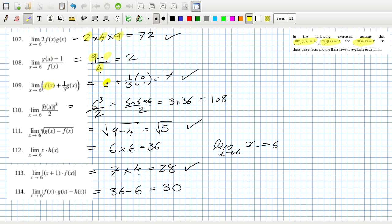...f limit which is four, plus a third times the limit of g which is nine, so that's four plus three - seven. This is the power rule. This is the limit for h, h being six cubed over...